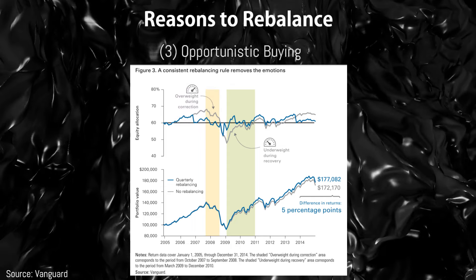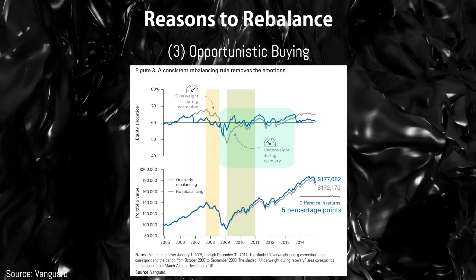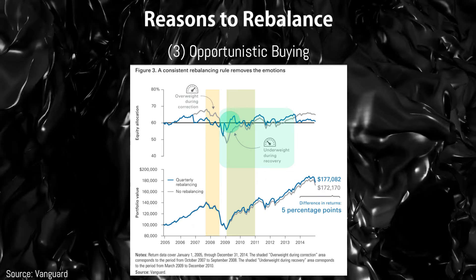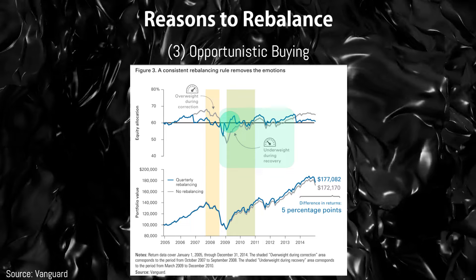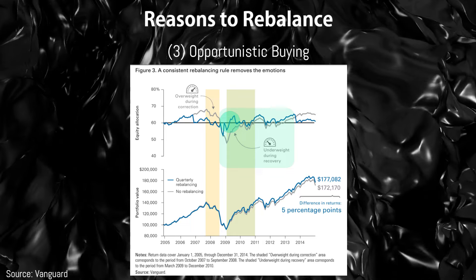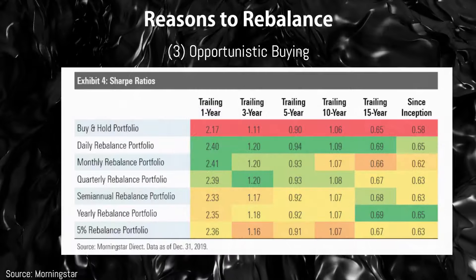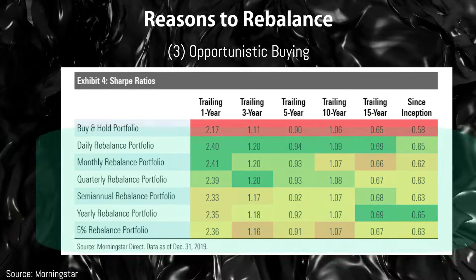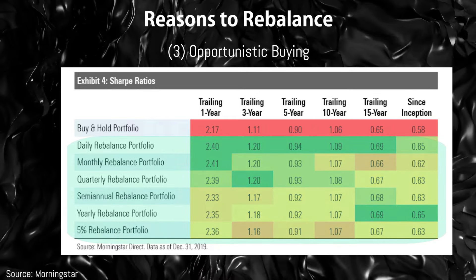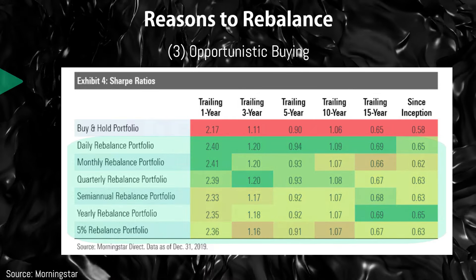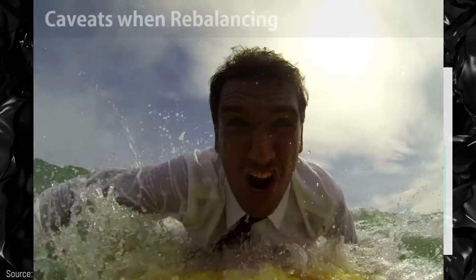Third, beyond risks and volatility, rebalancing in down markets results in opportunistically buying equities at lower prices, when bonds often outperform equities. These factors together translate to higher risk-adjusted performance for your portfolio, measured by metrics like the Sharpe or Sortino ratio.